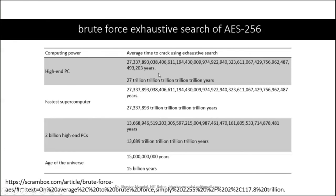Breaking AES-256 is equivalent to 27 trillion trillion trillion trillion trillion years. Even the fastest supercomputer in the world would take billions of years, and if an attacker somehow collected 2 billion high-end machines together, it would still take an immense amount of time. Given that the age of the universe itself is only 15 billion years, the complexity of breaking AES via exhaustive key search is practically impossible.